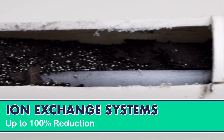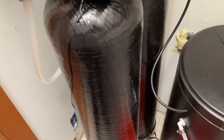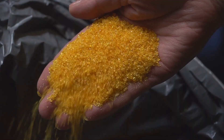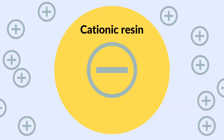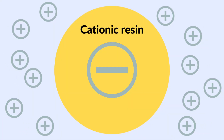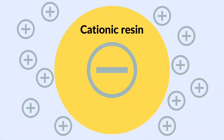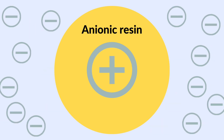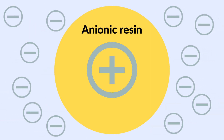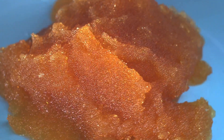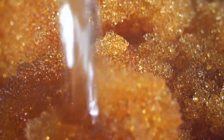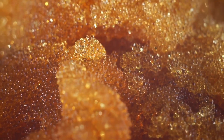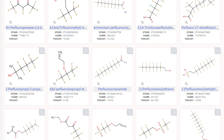Ion exchange systems are another effective solution for removing PFAS. These systems utilize a tank or cartridge filled with an ion exchange resin, either anionic or cationic. Cationic resins are negatively charged and remove positively charged impurities, while anionic resins are positively charged and remove negatively charged impurities. Acting like magnets, these resins attract specific contaminants, preventing them from passing through the system along with water particles. Anionic resins are the best choice for removing PFAS, since these chemicals are typically negatively charged.